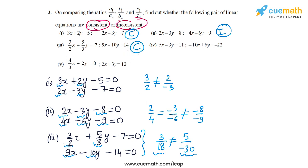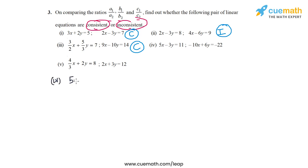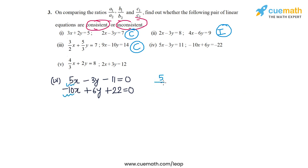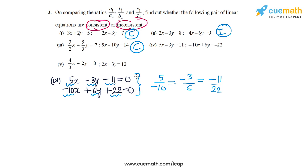For part 4, the two equations are 5x − 3y = 11 (or − 11 = 0) and −10x + 6y + 22 = 0. A1/A2 equals 5/(−10), which is −1/2 in lowest form. B1/B2 equals (−3)/6, which is also −1/2. These ratios are equal, so we check C1/C2, which equals (−11)/22, also equal to −1/2. All three ratios are equal, so the lines will be coincident — this pair has infinitely many solutions and is consistent.